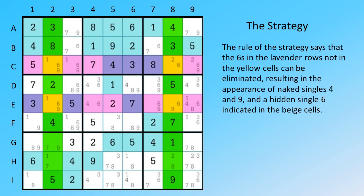The rule of the strategy says that the sixes in the lavender rows, not in the yellow cells can be eliminated, resulting in the appearance of naked singles four and nine, and a hidden single six indicated in the beige cells.